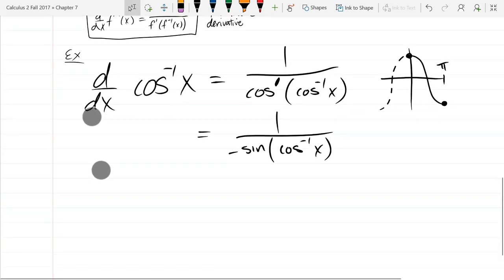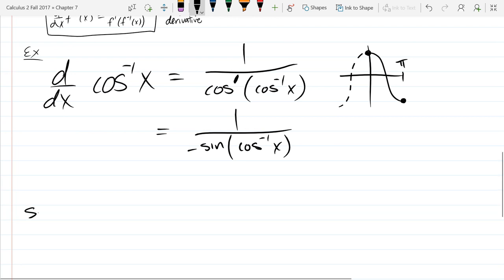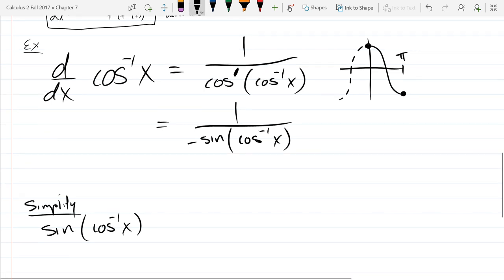So we'll simplify sine of cosine inverse of x. So the way we did this is normally trig functions input angles and output sides. So the inverse trig functions are going to input sides and output angles, because they're turning that backwards.